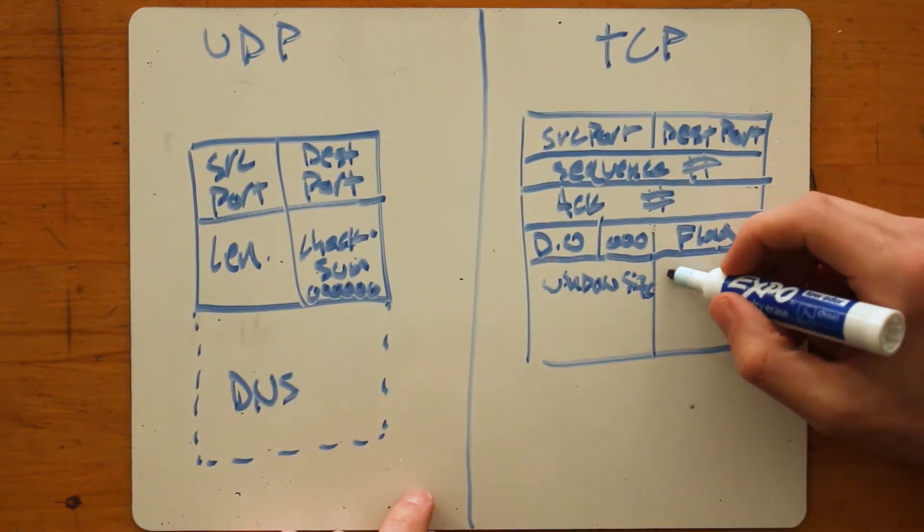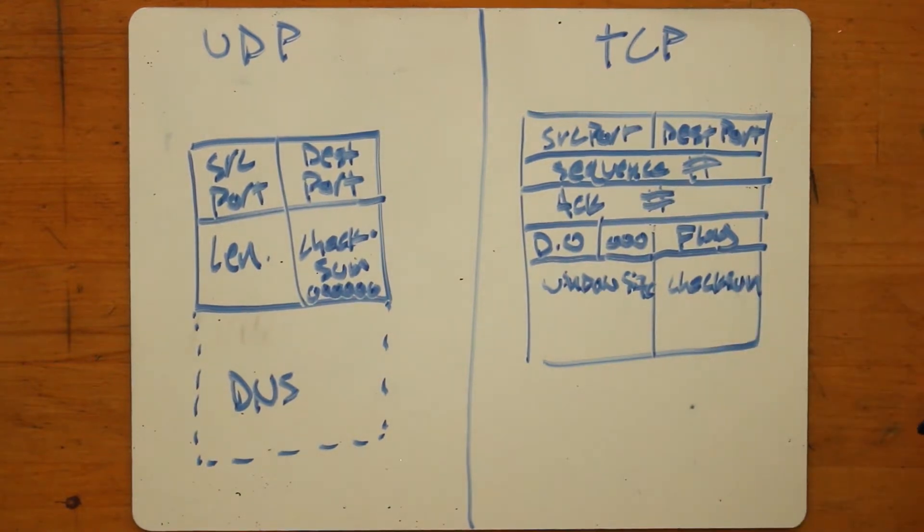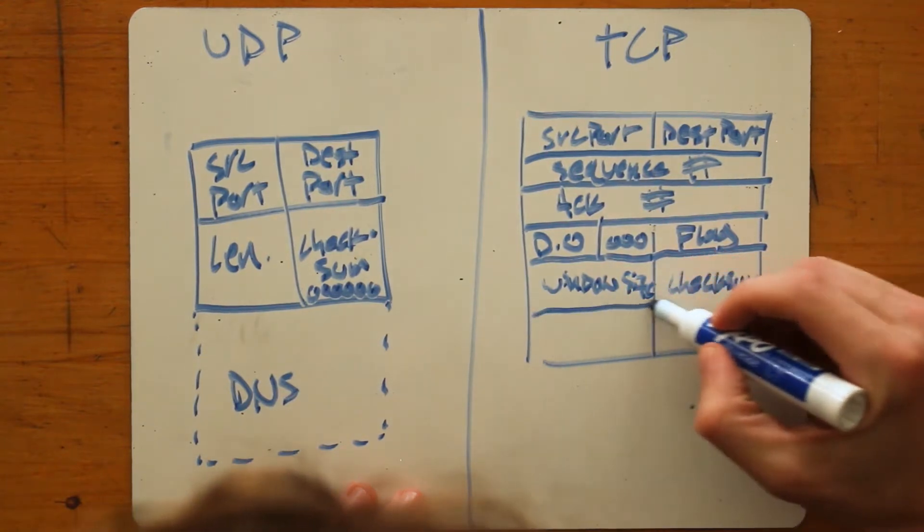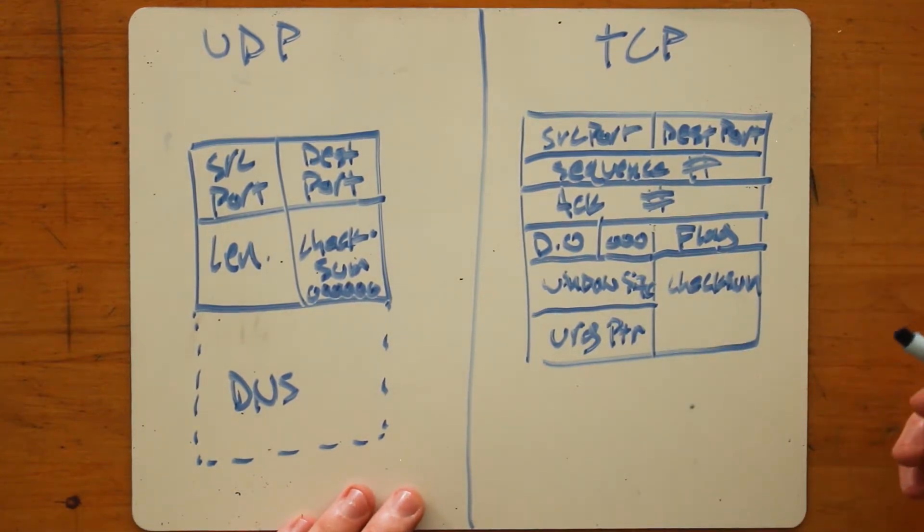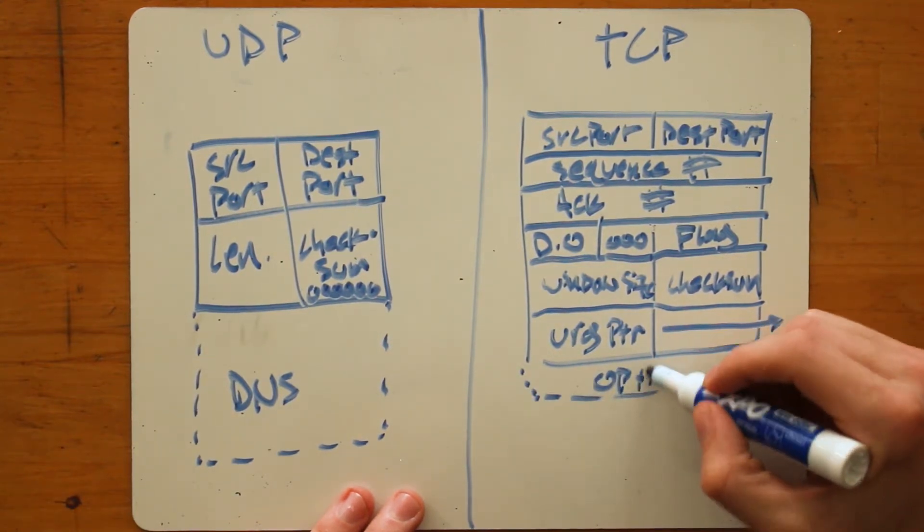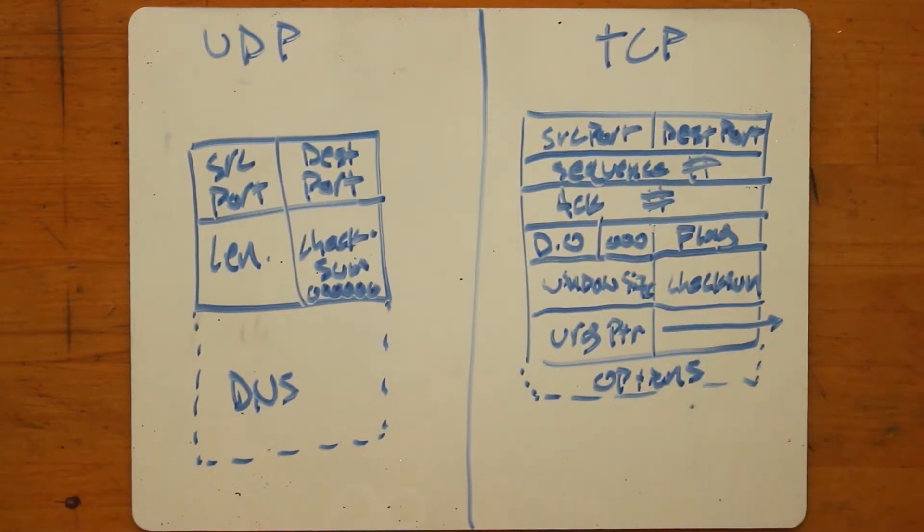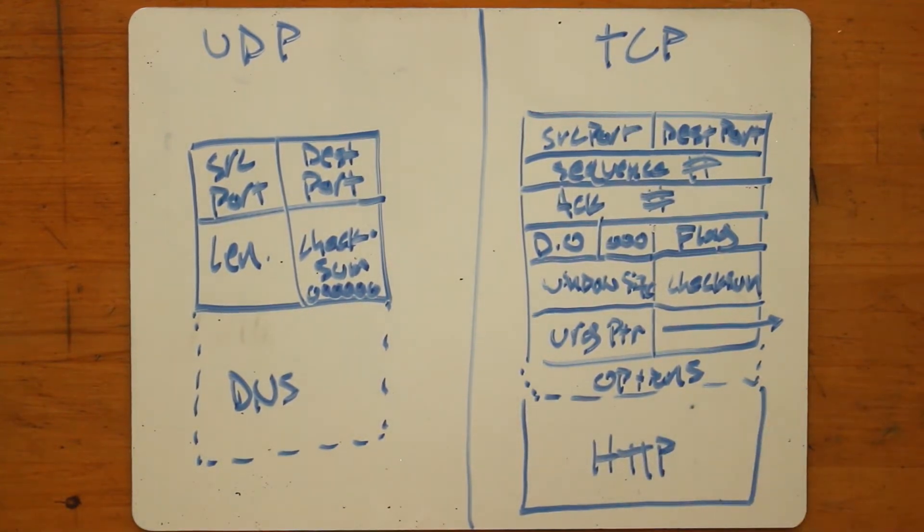Then you've got a checksum. And then you've got something called an urgent pointer. And then you've got after that from here, and potentially further down here, optional fields. Then finally followed by the payload data, which in our case was going to be the HTTP payload.